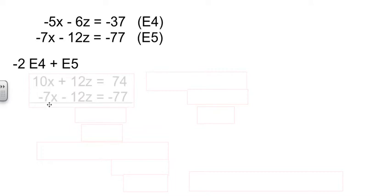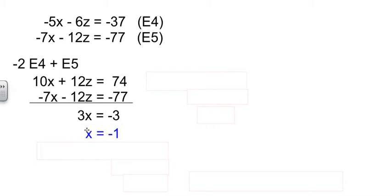Well, if I multiply -2 times E4, I get 10X + 12Z = 74. E5 I just bring down as it is. The Zs are going to cancel out. 3X = -3, so X is -1.